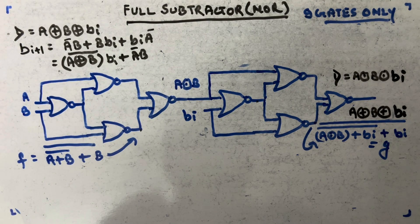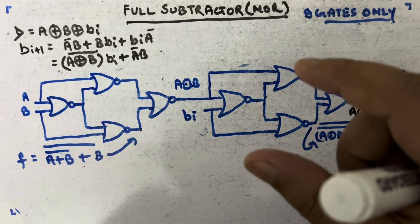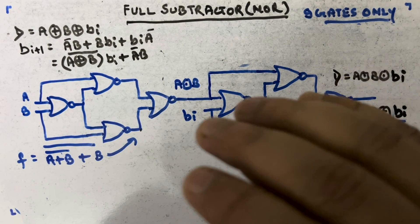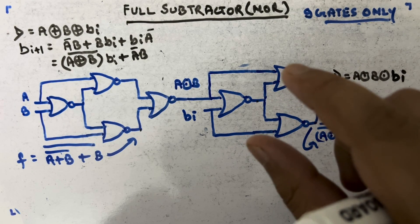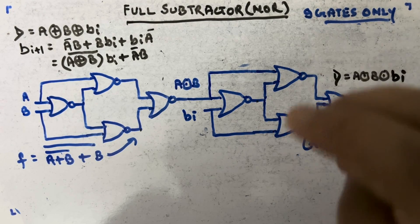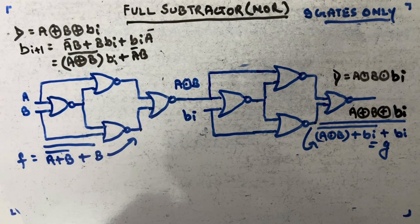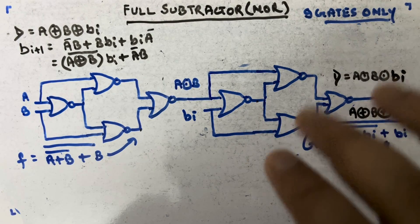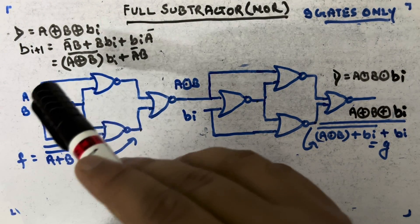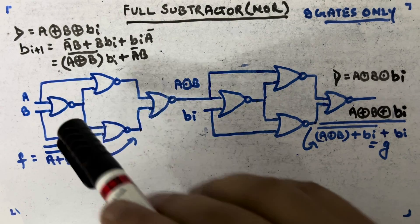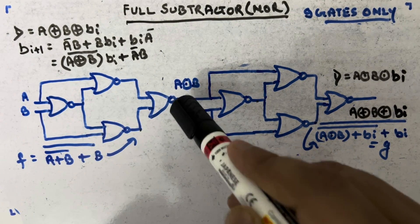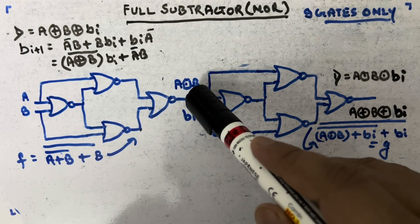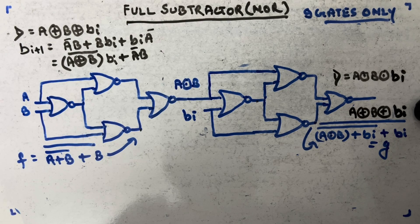Just like the full adder NOR type where we used only nine NOR gates, here also you can do the same for the full subtractor. The difference expression and borrow expression are available. The difference part is the same as the sum part of the full adder - XOR of three inputs - so the circuit is the same. At the output of the second stage you get A XNOR B XNOR Bi.